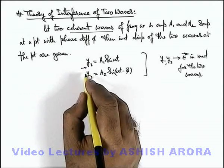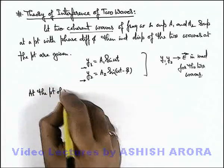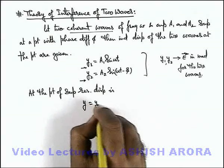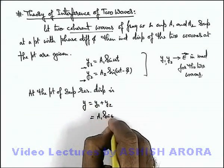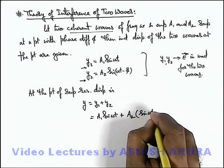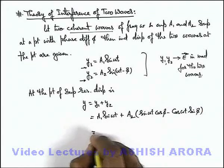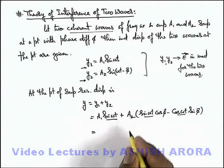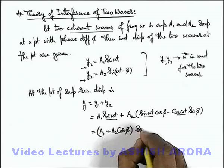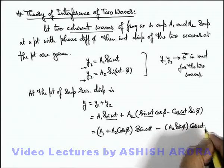So if y1 and y2 are the individual displacements, then at the point of interference or superposition, the resulting displacement y = y1 + y2 = e1 sine(omega t) + e2 sine(omega t minus phi). Opening this expression and splitting terms of omega t, we get: (a1 + a2 cos phi) multiplied by sine(omega t), minus a2 sine(phi) multiplied by cos(omega t).